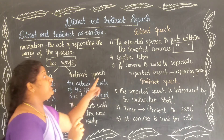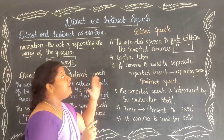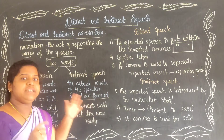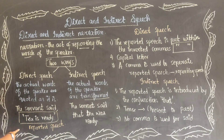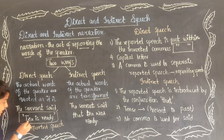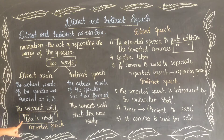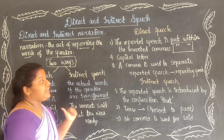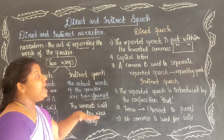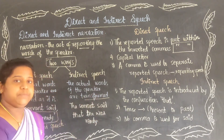The reported speech always begins with a capital letter. See here — 'Tea is ready.' The word 'Tea' is the first word, so it begins with a capital letter. A comma is used to separate the reported speech and the reporting speech.